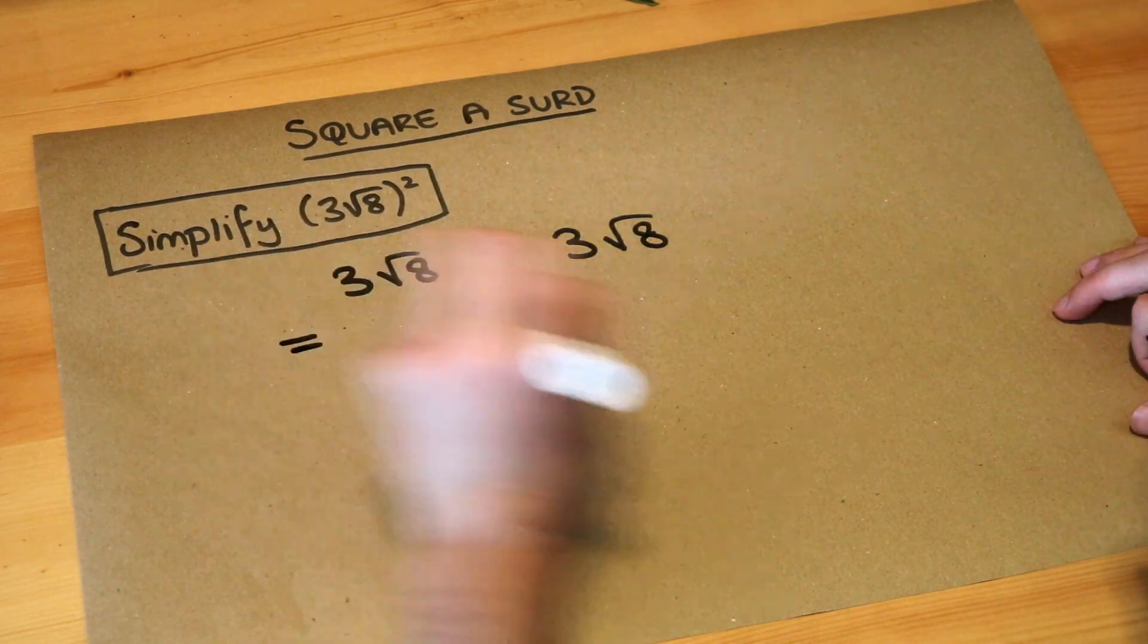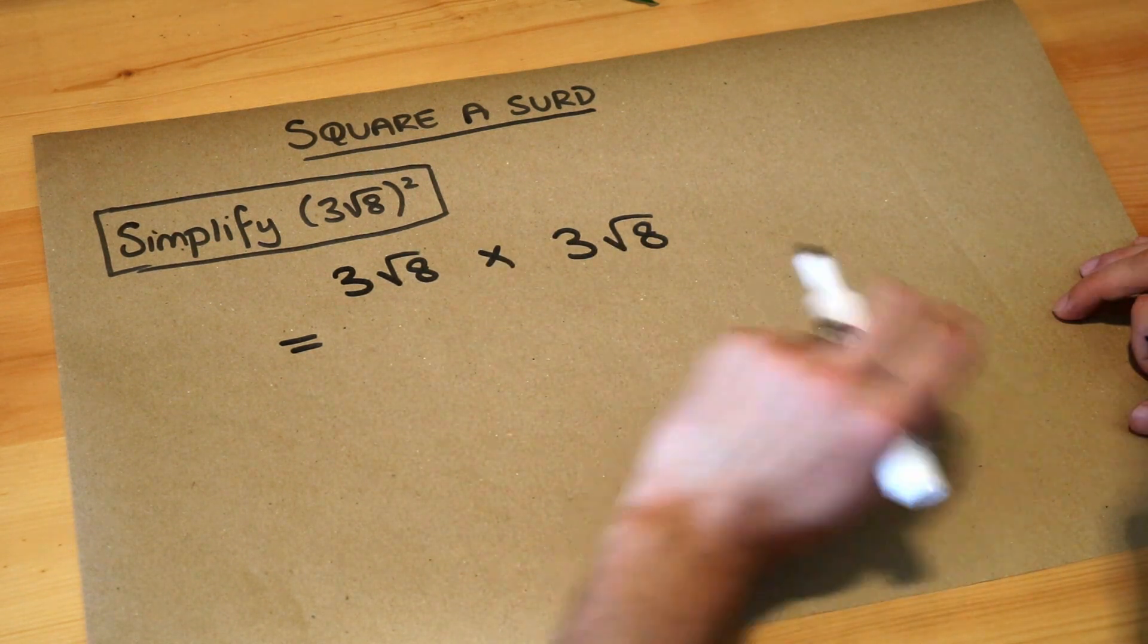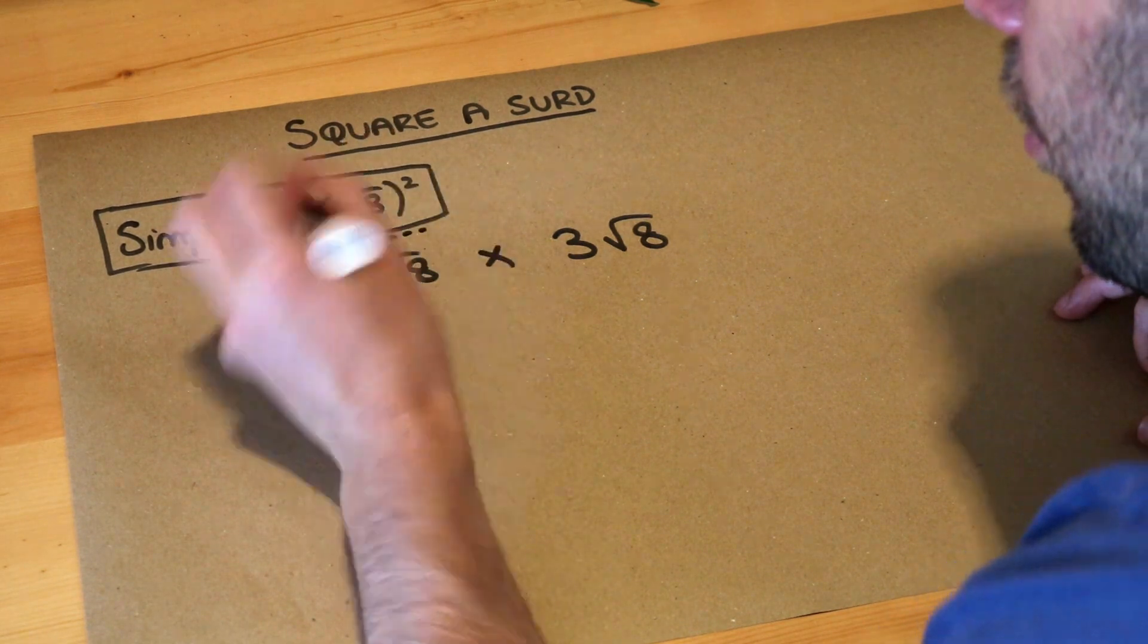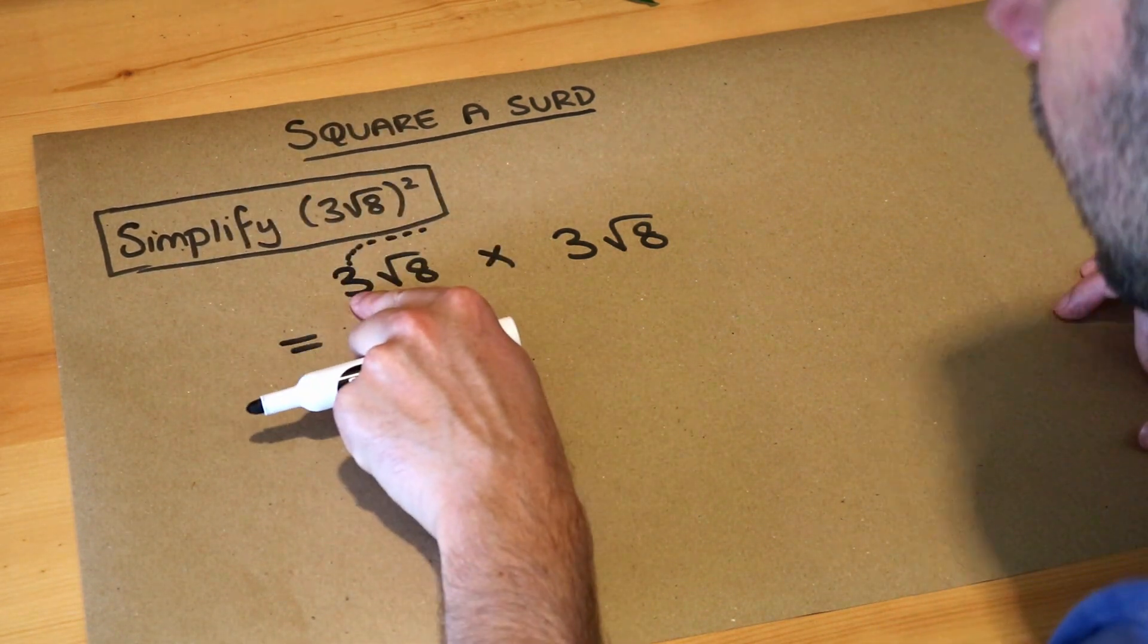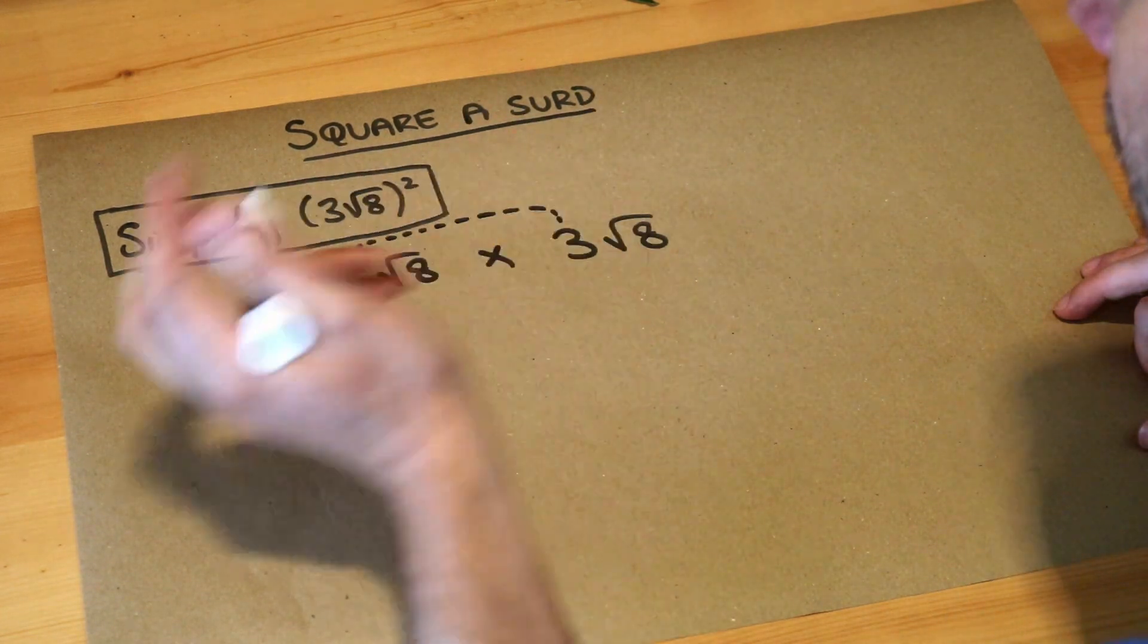Now in a previous video we saw how we can multiply a multiple of a surd by a multiple of a surd. We first multiply the non-surdy things together, so the 3 is not a surd, it doesn't have a root over it, so we times that 3 by the non-surd here. What's 3 times 3? Well it's just 9.